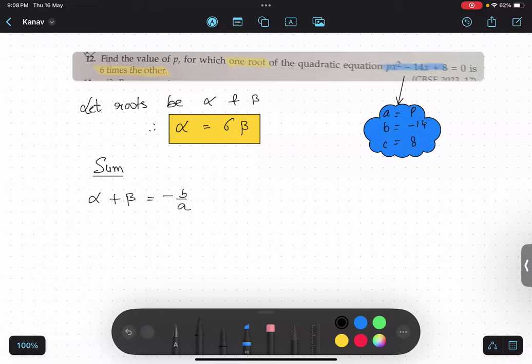Now in the next line, I'm going to substitute alpha value. Six times beta plus beta equals to b value, minus minus 14 upon p. Is this thing clear?